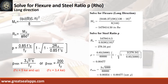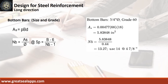Given resistance factor equals 0.9, B equals 68 inches, and D equals 18 inches, the beam design ratio RN equals 276.34 PSI and reinforcement ratio rho equals 0.00477. Continuing at long direction, the area of steel for long direction bars is 5.83848 square inches, and the number of bars for 3/4 inch diameter is 14.